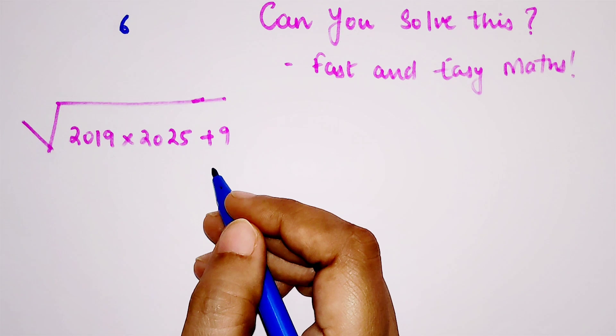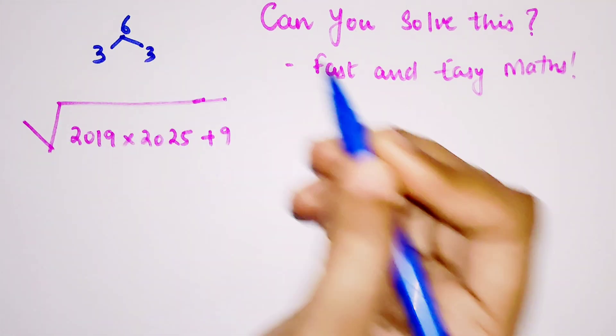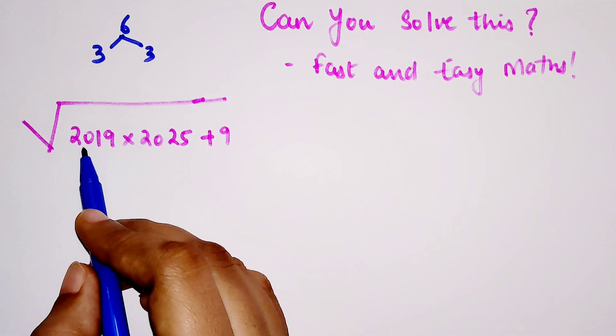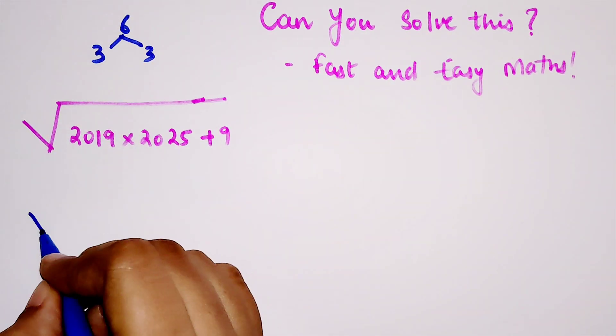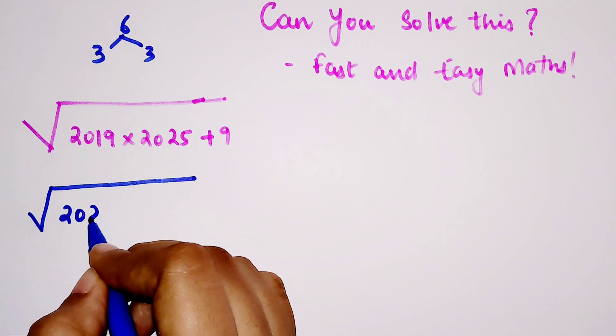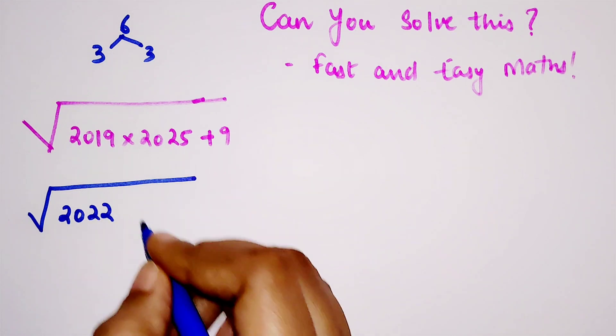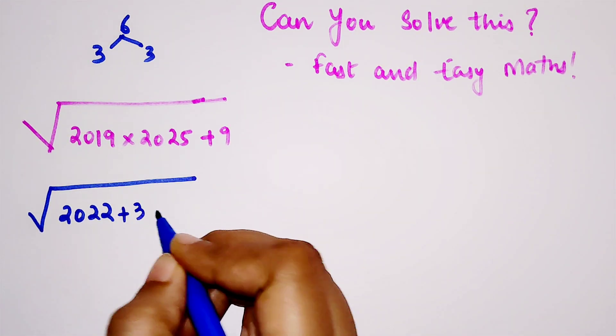It is six ahead, so if I split this six as three and three, when I add 2019 by three, the number I get is 2022. Right, 2022.